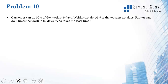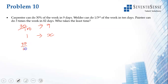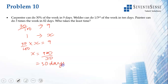A carpenter can do 30 percent of the work in 9 days. So 30 by 100 of the work is done in 9 days. To find when one full work is done: 30 by 100 times x equals 9, so x equals 900 by 30. The carpenter takes 30 days to finish the work.